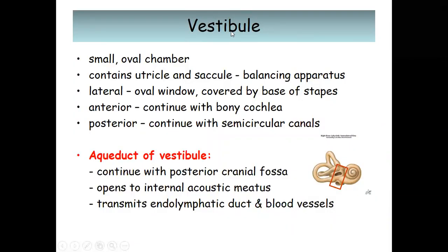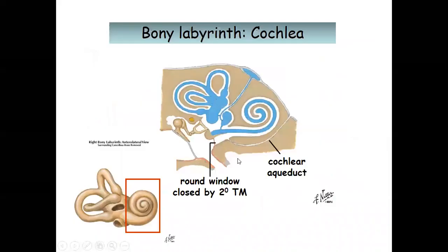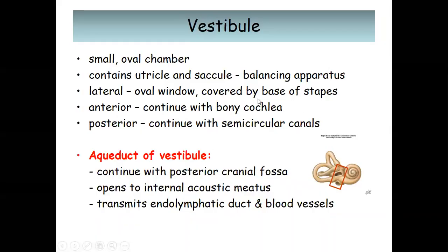The vestibule is a small oval chamber that contains the utricle and saccule, which are part of the balancing apparatus. On the lateral part, we have the oval window, which is covered by the base of the stapes.